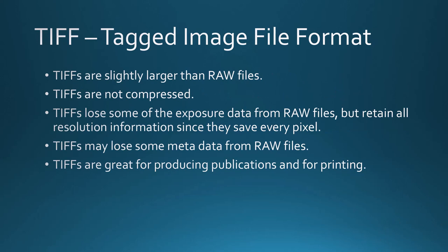TIFF, or Tagged Image File Format, is also a very old format — it was and still is used in faxes. TIFFs are slightly larger than RAW files and are not compressed. TIFFs lose some of the exposure data from RAW files, so they don't have the greater dynamic range, but they retain all of the resolution information — since they're not using compression, they save every pixel. TIFFs may also lose some non-standard metadata from RAW files, though typical data like exposure, date, time, and GPS should be saved. TIFFs are great for producing publications and for printing.